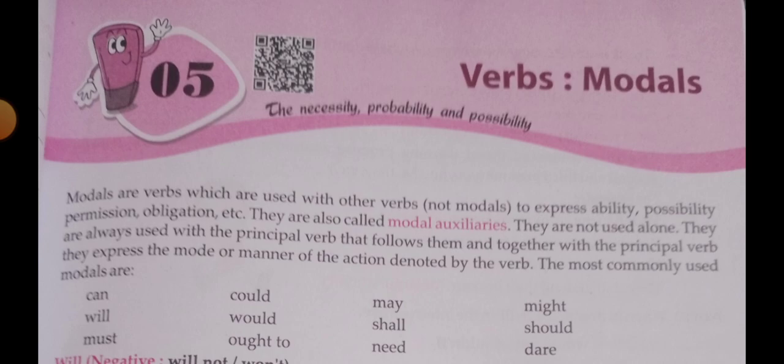Used to is used to express the past — habits or states that no longer happen. For example: 'I used to fly kites when I was young.' 'I used to go for a morning walk — I don't go now.' 'I used to go to Paris, but now I don't.' To express the existence of something in the past: 'There used to be a restaurant here 10 years ago.' 'There used to be a garden here long ago.'